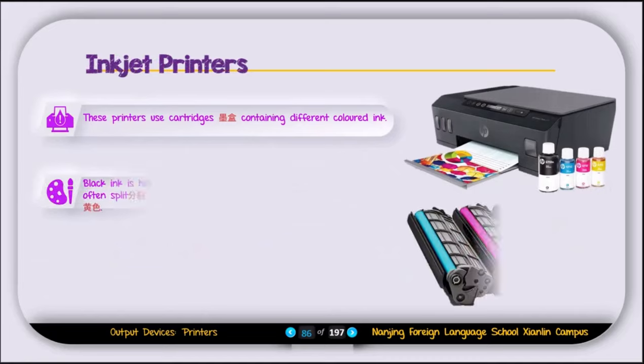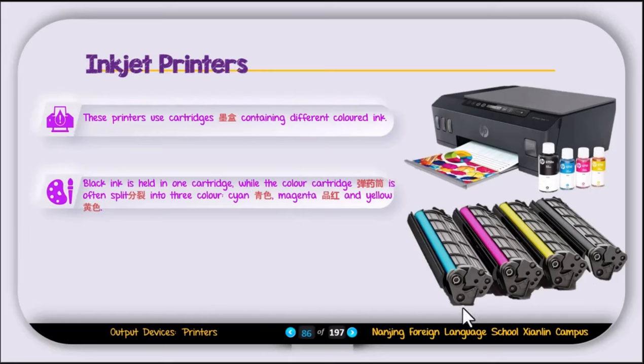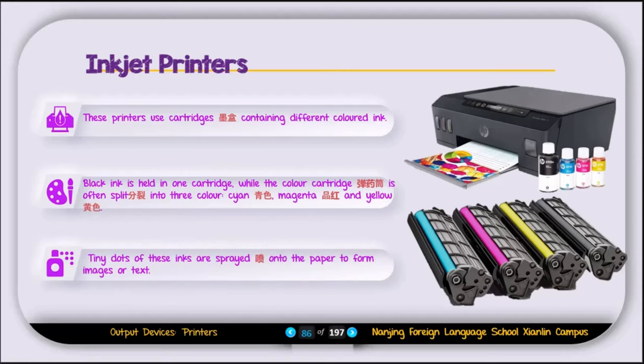The inkjet printer uses cartridges containing different colored ink. There are four cartridges: cyan, magenta, yellow, and black — known as CMYK. Black ink is held in one cartridge, while the colored cartridge is split into cyan, magenta, and yellow. Tiny dots of ink are spread onto the paper to form the image or text.